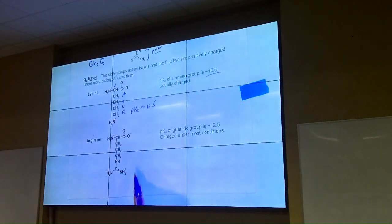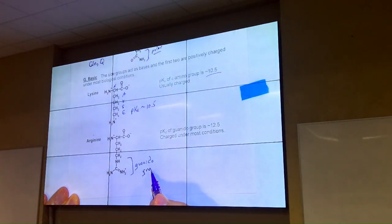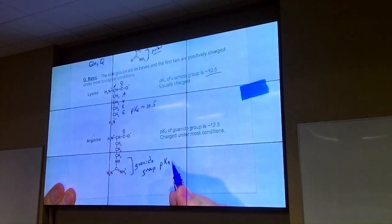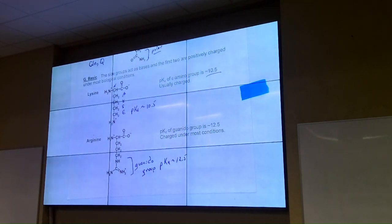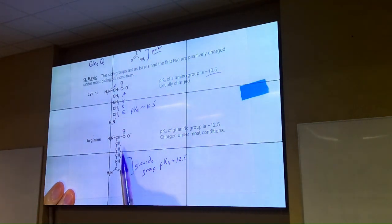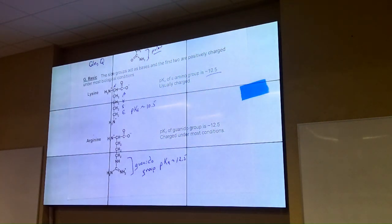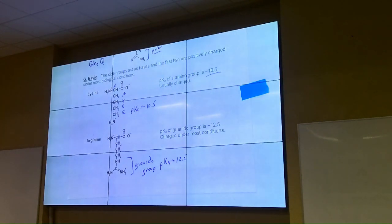Arginine has this guanidino group, with a pKa on the order of 12.5. So it's even more basic than lysine and is going to be charged under just about all biological conditions. In fact, lysine and arginine carrying these positive charges are really good for offsetting the polyphosphate of DNA — all those negatively charged phosphates. They will wrap around protein histones that have a lot of lysines and arginines to offset the negative charge of the phosphates.